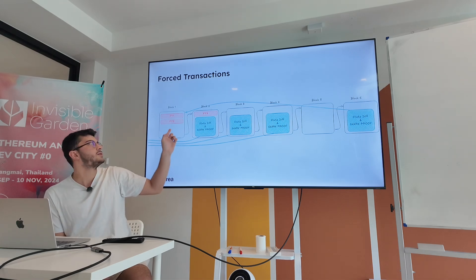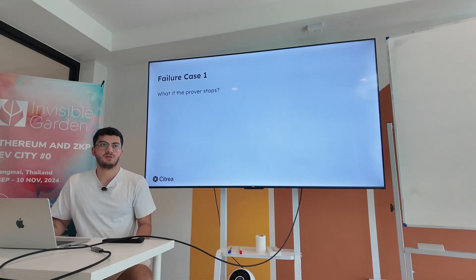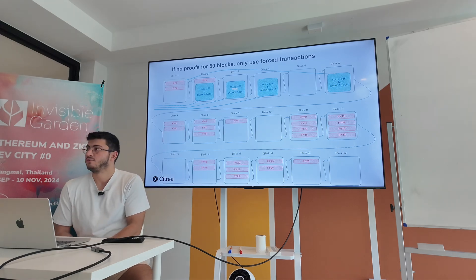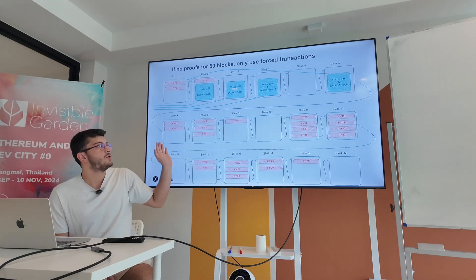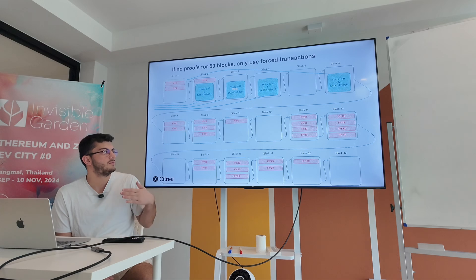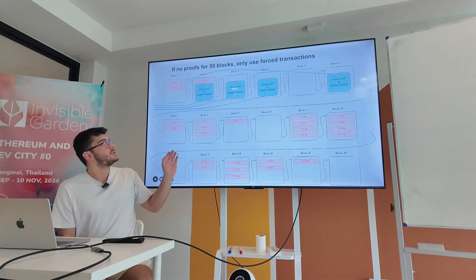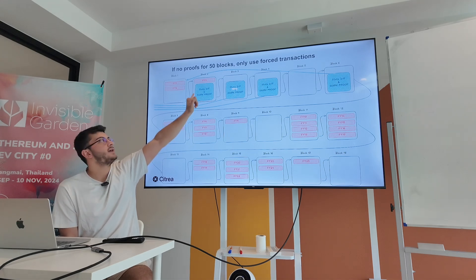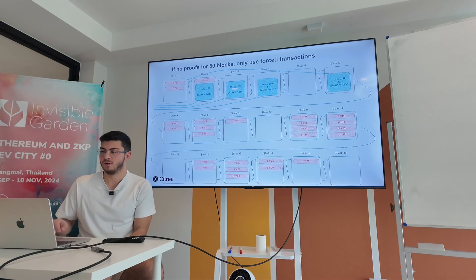On Bitcoin, forced transactions appear in red, and all our SNARK proofs should refer to a block. For example, in block six, that proof refers to block one, which means it has to include all those forced transactions. For the failure case — what if the prover stops and there's no SNARK proof referring to any forced transactions? If at block six our sequencer stopped and we can no longer generate proofs, we can solve this by falling back to only forced transactions. Essentially, we get a ZK proof of our rollup's latest state by scanning from the genesis block, verifying SNARK proofs, applying state diffs, and arriving at the latest state root in a succinct way.